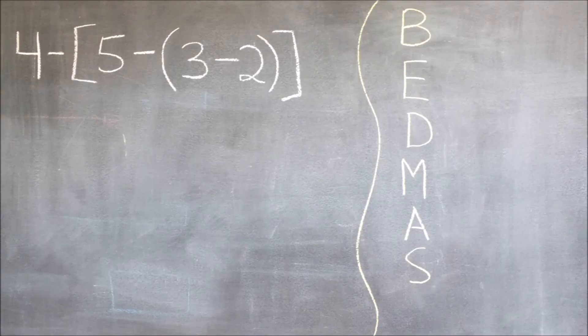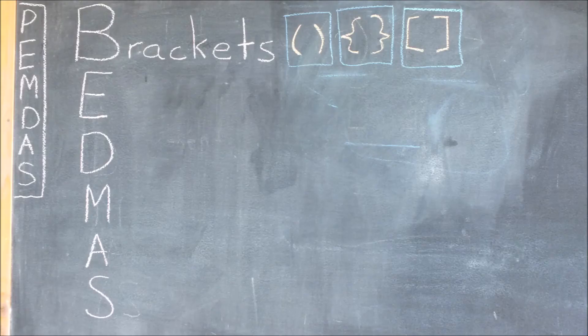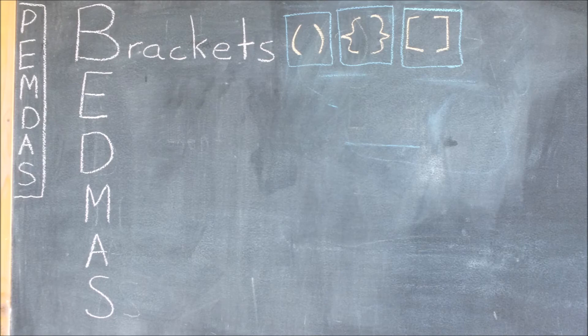Next up, we have another example that uses BEDMAS. But before we begin, we need to learn about some types of brackets. Here are three types of brackets. The first one is round brackets. The second one, braces or curly brackets. The third one is square brackets or box brackets.